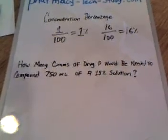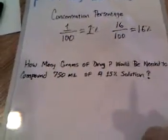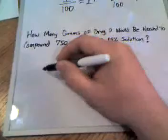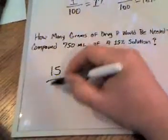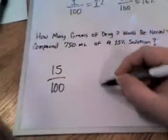We're going to use proportions math here. Let's set up our formula. We know that 15 over 100 equals 15%, and we know we want to make a 750 milliliter solution.